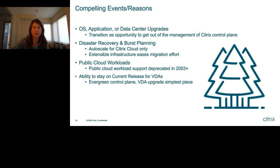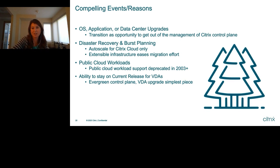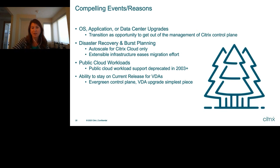Other compelling events: maybe you don't have a well-developed disaster recovery or burst plan. You can leverage Citrix Cloud, a public cloud provider, and autoscale technology to quickly stand up a disaster recovery plan in a short period of time — because the extensible infrastructure only requires two cloud connectors to get started. Or maybe you want a new CR feature on public cloud workloads with the latest and greatest VDA versions. Citrix Cloud Control Plane is the only way to do that, and it lets you stay on CR for VDAs because the evergreen control plane is there and VDA upgrades are really the easiest piece of the puzzle.